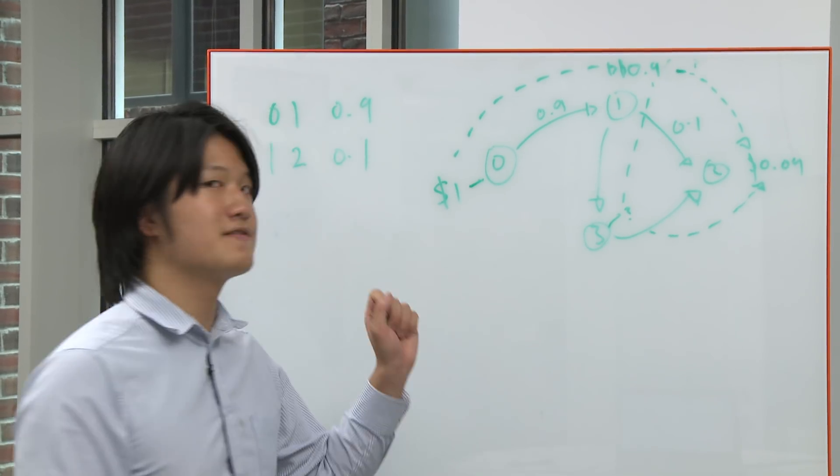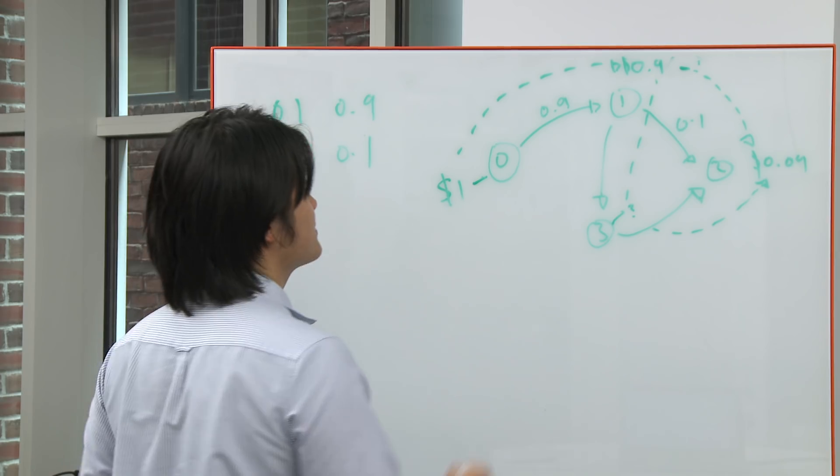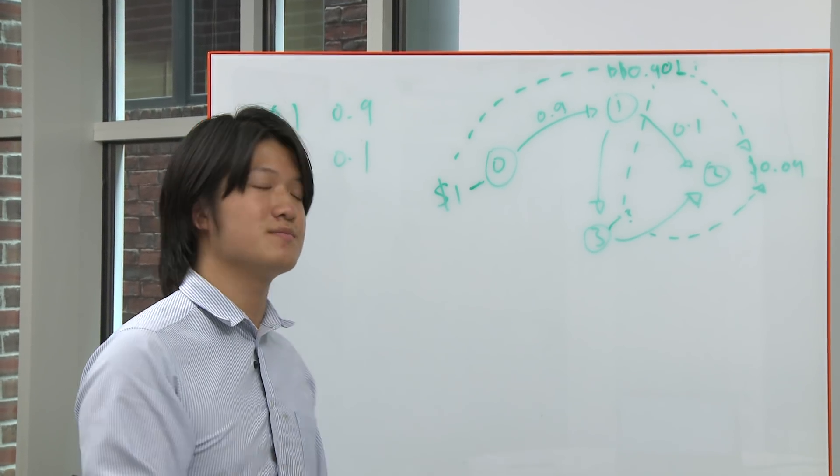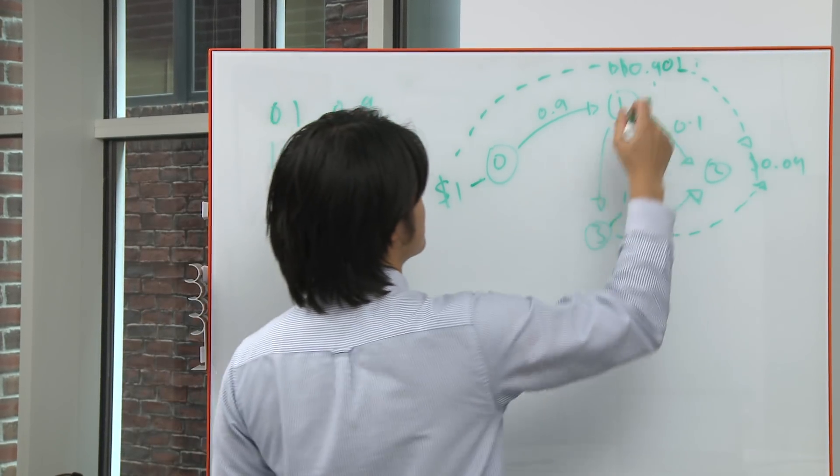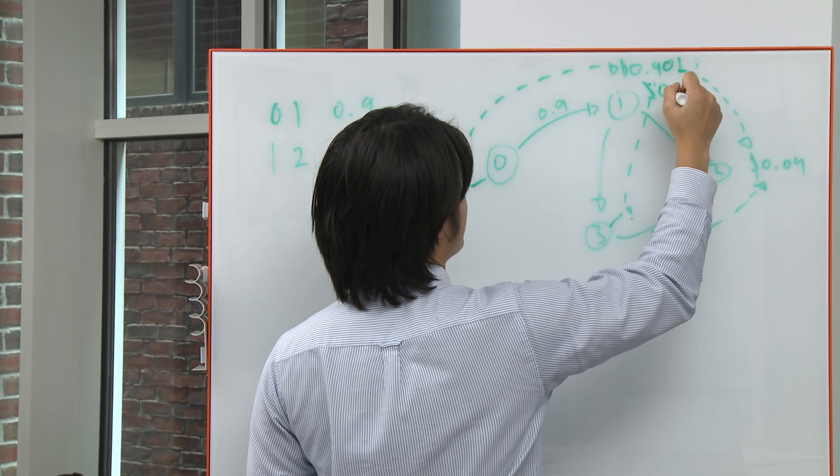So for instance here, instead of storing 0.9, we'd store 0.901 because that's the maximum that the edge could be. And we'd store that there's a minimum of 0.899.